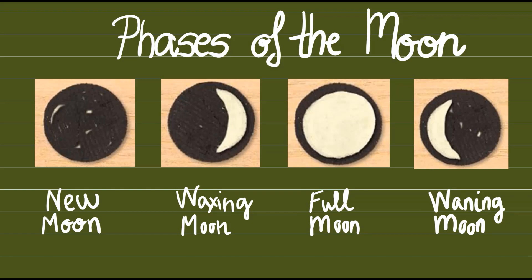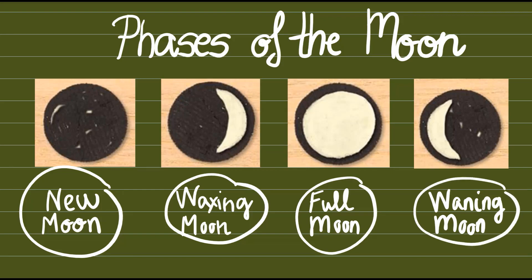Para repasar, podemos utilizar una forma dulce de trabajar las fases de la luna. Esta sería la luna nueva. Waxing moon es luna en fase creciente. Full moon es luna llena. Y waning moon es luna en fase menguante.